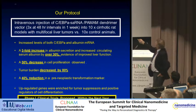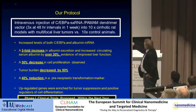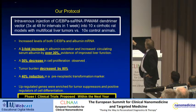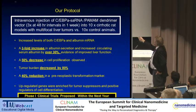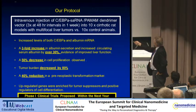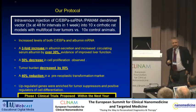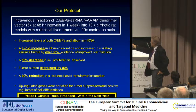Our protocol was simply this: intravenous injection of the saRNA dendroplex three times over 48-hour intervals in one week, in 10 liver cancer models versus 10 control models. What we observed were increased levels of key proteins as well as albumin mRNA, a three-fold increase in albumin secretion, over 30% improvement in circulating albumin serum, 50% decrease in cell proliferation, and tumor burden decreased by 80% with a 40% reduction in pre-neoplastic transformation markers.